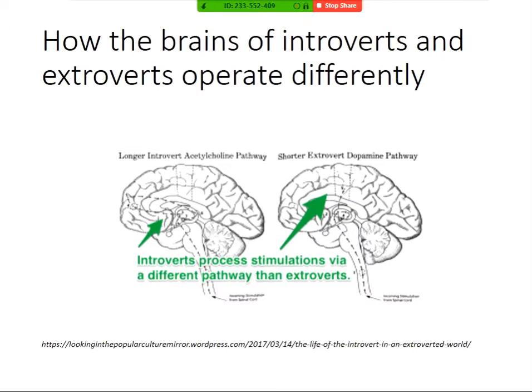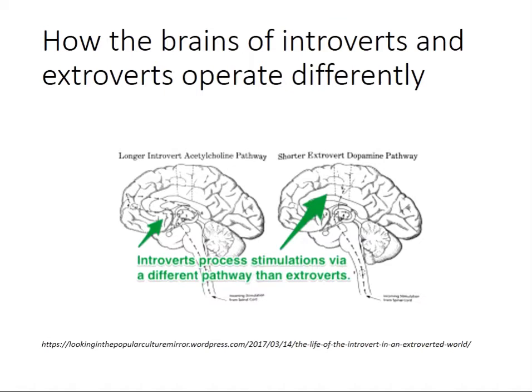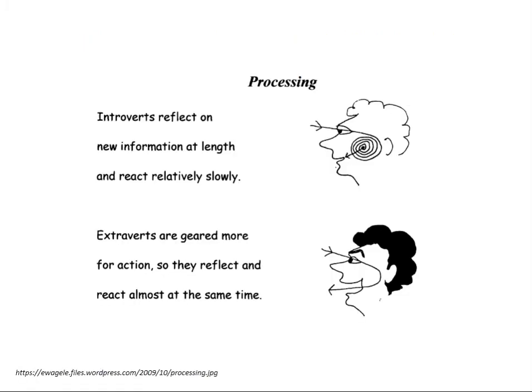So an extrovert will go to a party with loud music and plenty of new people to soak up all they can to feel stimulated, while an introvert will go to the same party, listen to one song and talk to one person, and feel the same level of excitement. Knowing there are real physical differences in the brains of introverts and extroverts, in reality only about a quarter of the population is introverted. Introverts generally reflect on new information at length and react relatively slowly, while extroverts are geared more for action and reflect and react almost at the same time.